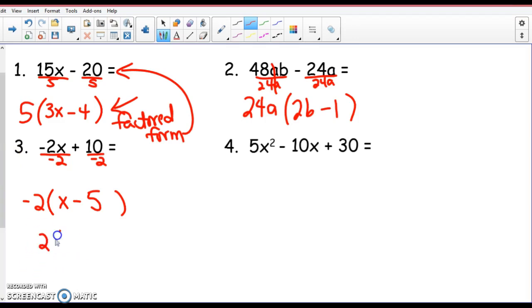What if I would have factored out a positive 2? I change this and I factor out a positive 2. So now I'm dividing by positive 2. What will I have left in parentheses? What's 10 divided by 2? Negative x plus 5. Aren't these two things the same?